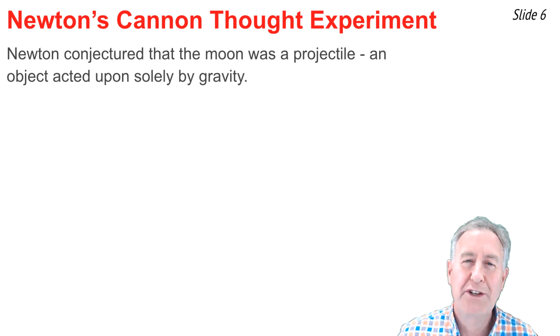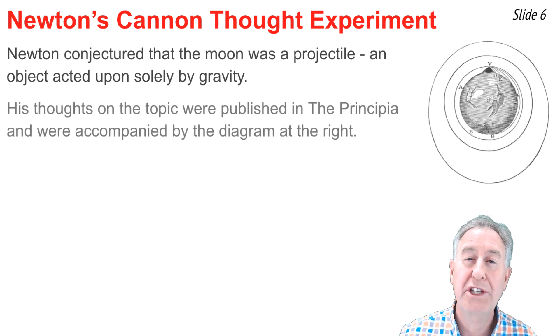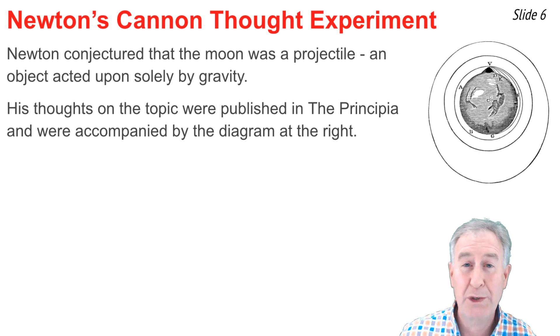Isaac Newton postulated that the moon was a projectile, an object upon which the only force is gravity. His thoughts in this were published in the Hallmark book, The Principia, and included the diagram you see above. In his writings, he suggested what has come to be known as the Newton's Mountain Thought Experiment, or the Newton's Cannon Thought Experiment.